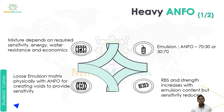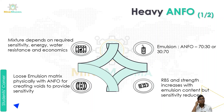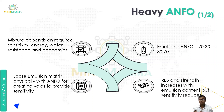Heavy ANFO is a mixture whose composition depends on the required sensitivity, energy, water resistance, and economics. It consists of a loose emulsion matrix physically mixed with ANFO, creating voids to provide sensitivity. The emulsion-to-ANFO ratio can be either 70:30 or 30:70.